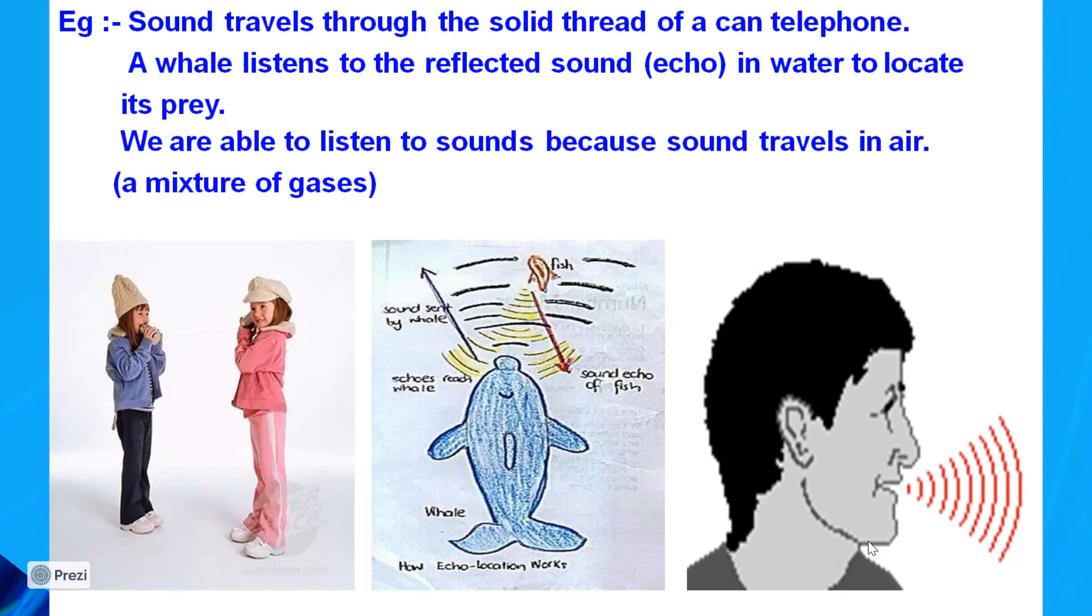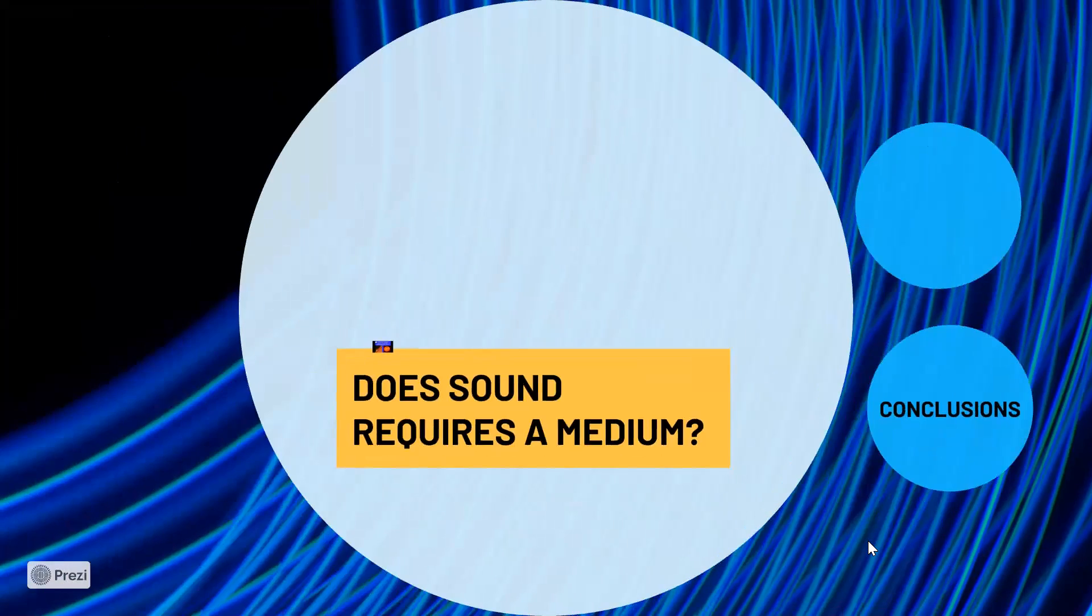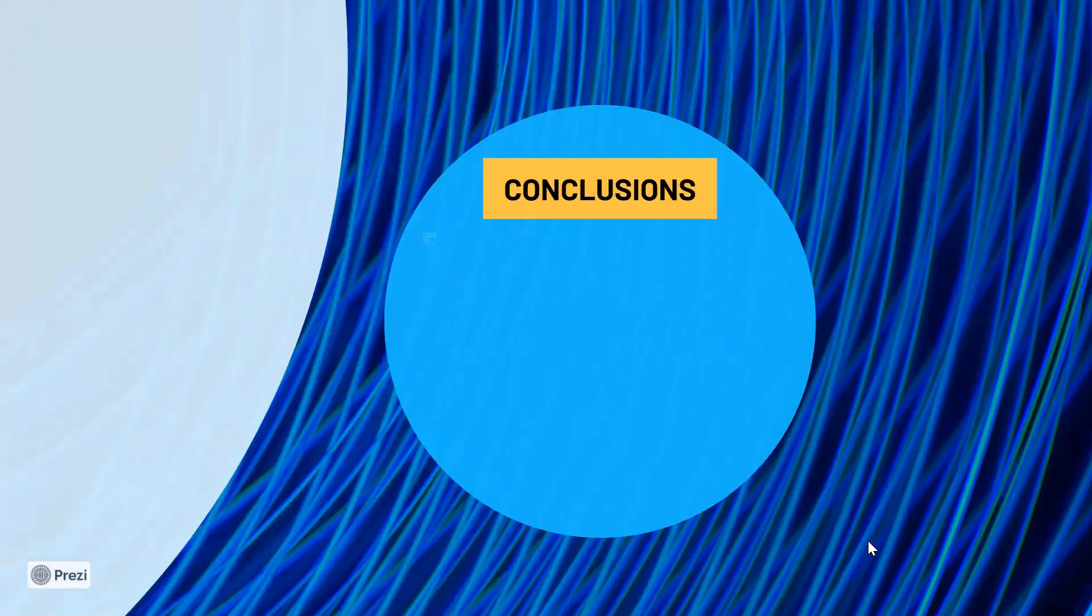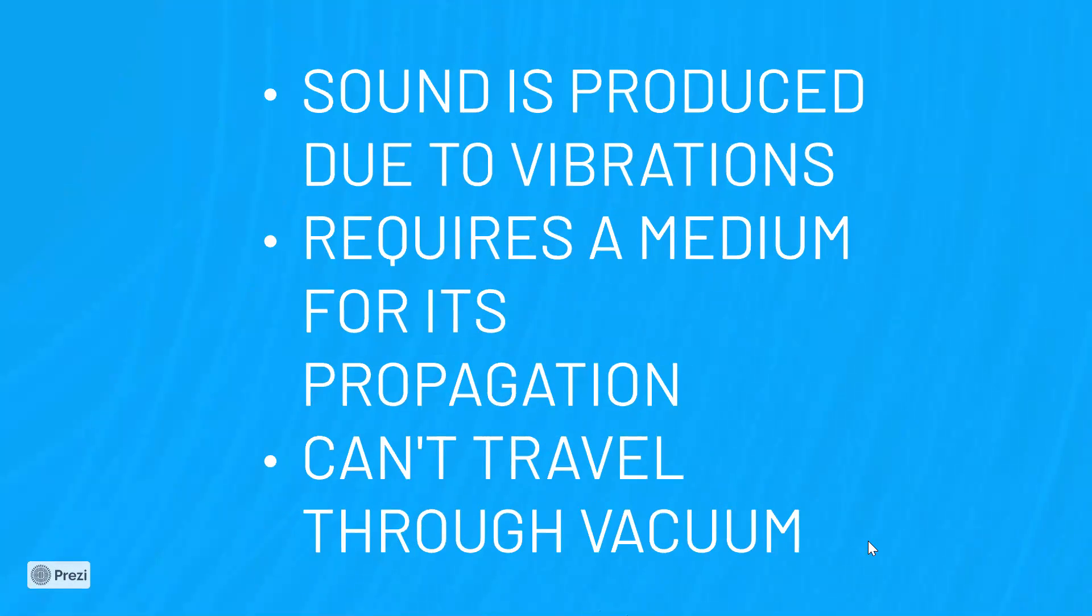So today's topic is a very simple topic to conclude with. Sound is produced due to vibrations, requires a medium for its propagation, and will not travel through vacuum. Simple. Let's wait for the next video to get to know more characteristic features of sound. How does sound differ from one person to another person and why some sound is pleasant to hear and something is unpleasant to hear. We will discuss about different characteristics of sound in our forthcoming video.